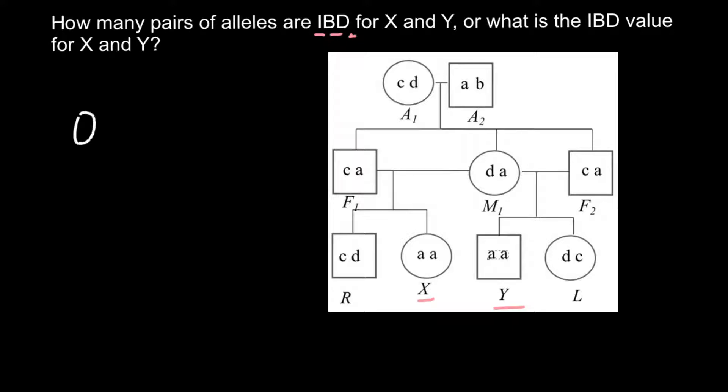Zero is when we compare one person with another person and none of the alleles would be the same. We can see this index of 0 for person R and X. None of the alleles would be the same, so we can say that the IBD index here would be 0.